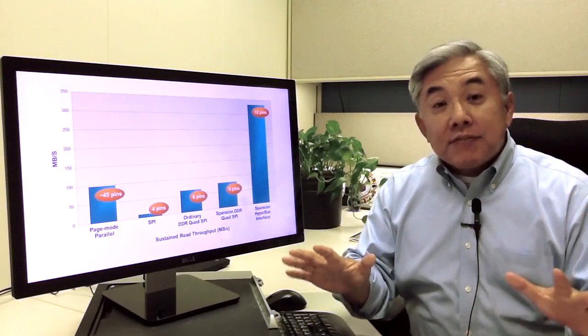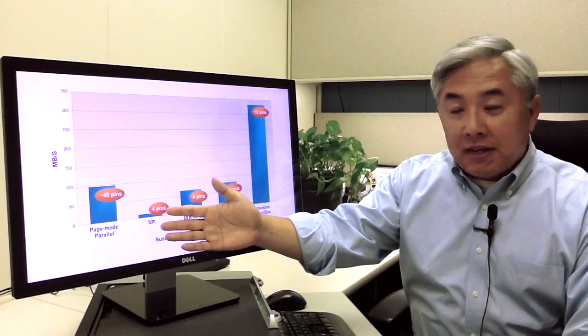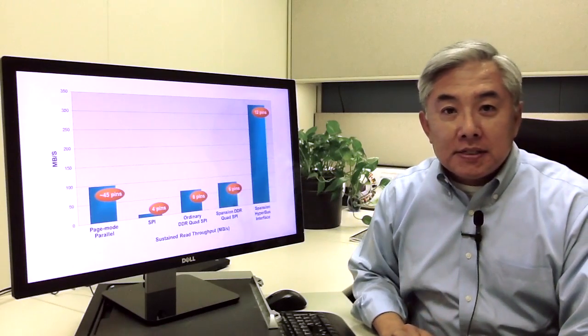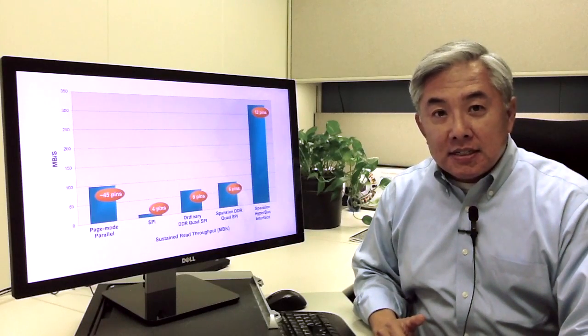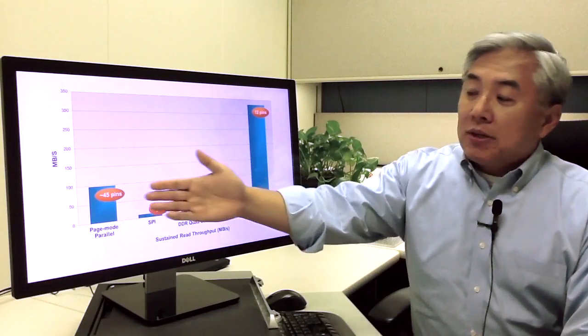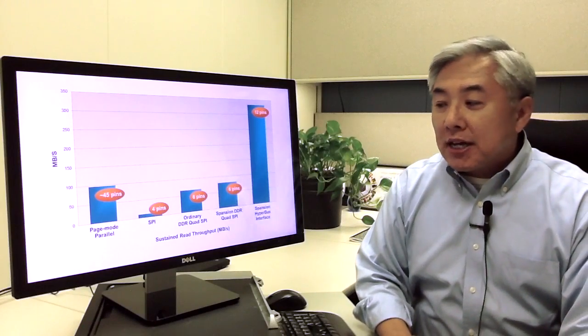And because of that the pin count is extremely large. For a 1-gigabit device it's approximately 45 pins. The throughput of this device, of course, because it's a wide bus, is superior. So for a Spansion device it goes up to 96 megabytes per second.